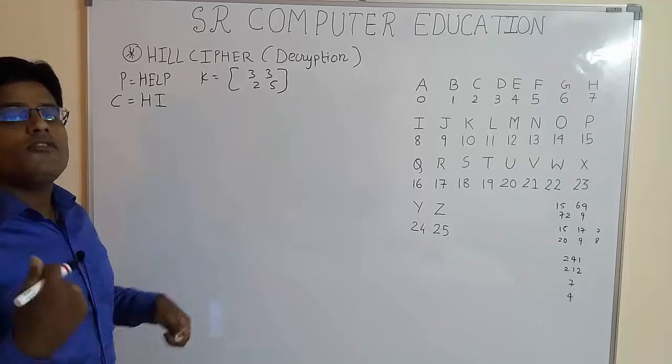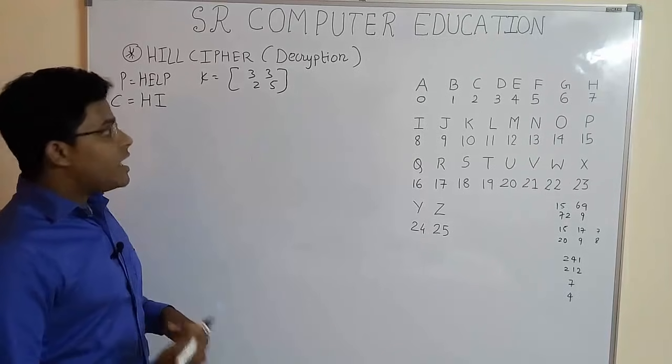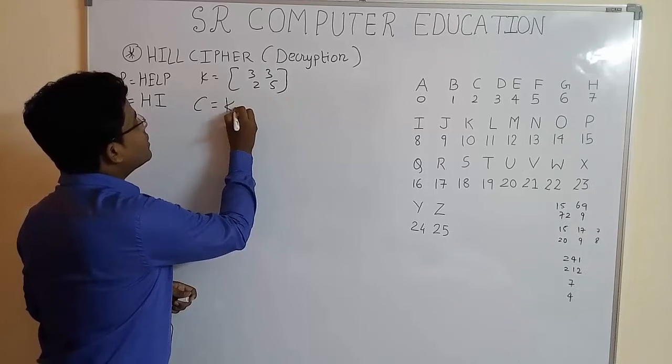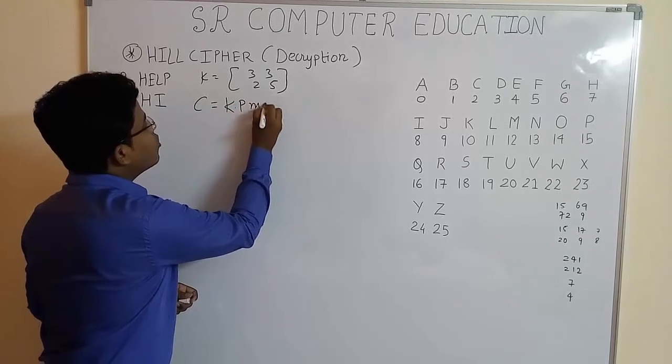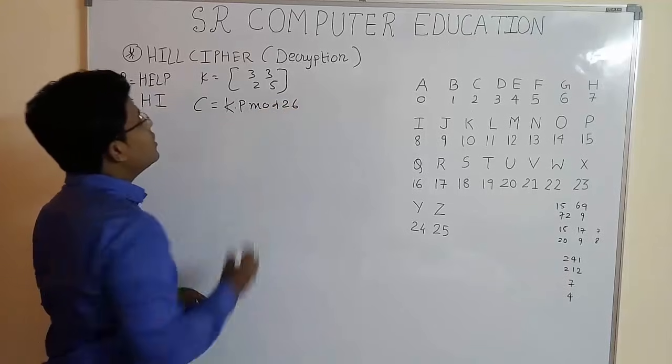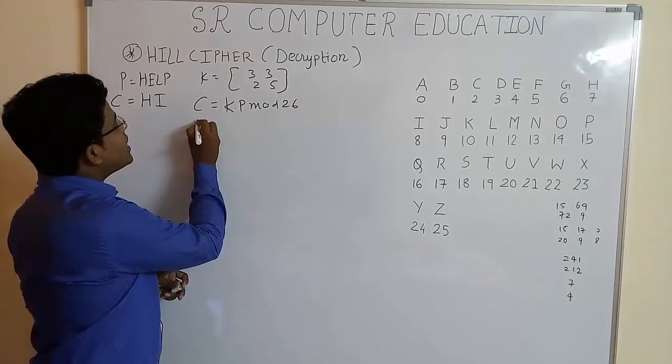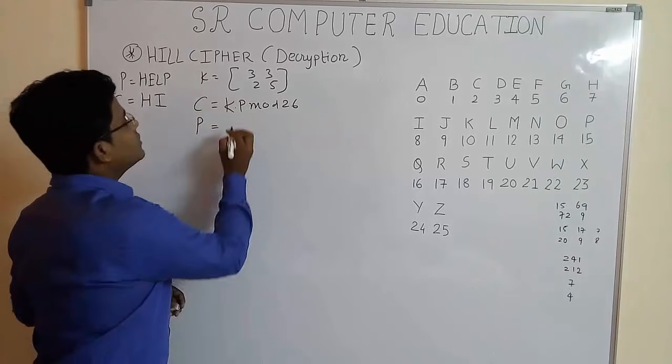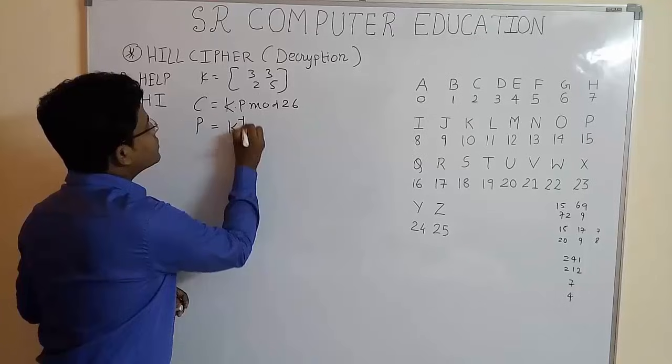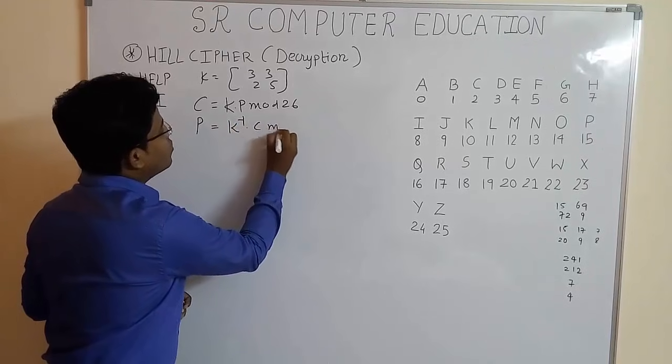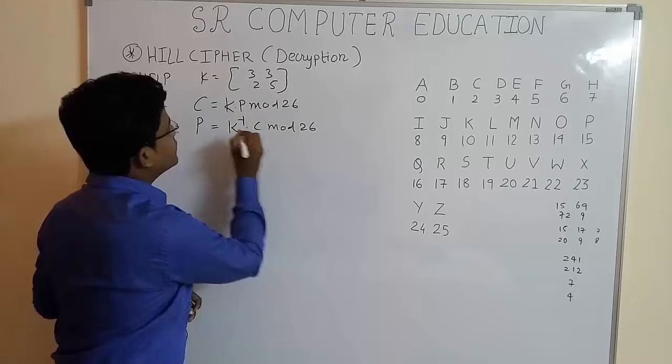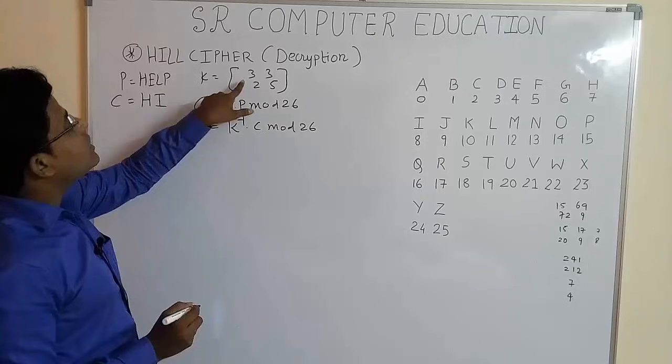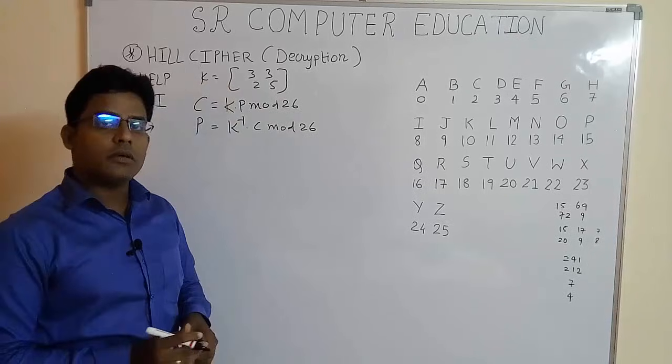So the formula for encryption was cipher text equal to K dot P mod 26. So the formula to find plain text, that is formula for decryption, is K inverse dot C mod 26. This K inverse here is a problem. We have to find the inverse of this key matrix.